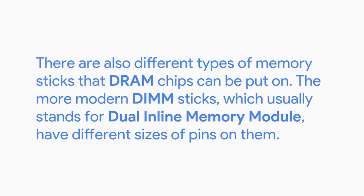There are also different types of memory sticks that DRAM chips can be put on. The more modern DIMM sticks, which usually stands for Dual Inline Memory Module, have different sizes of pins on them. We don't really buy RAM based on the number of DRAM chips they have — they're labeled by the capacity of RAM on a stick, like an 8GB stick of RAM.